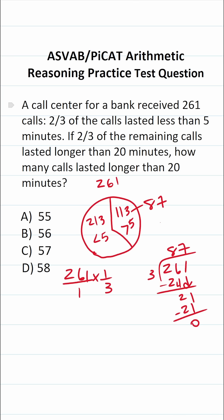Now let's move on to the second statement. If two-thirds of the remaining calls lasted longer than 20 minutes. So 87 of the 261 calls were greater than five minutes, and two-thirds of those 87 calls lasted longer than 20 minutes.